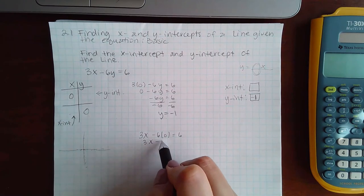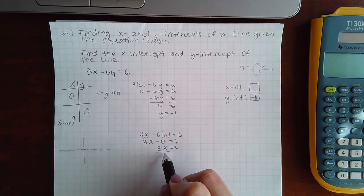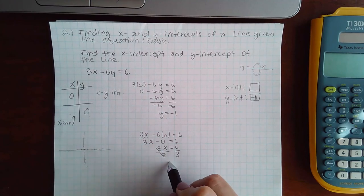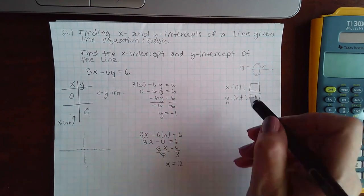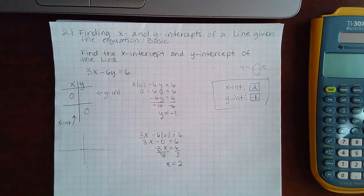So I get 3x minus zero equals 6, or just 3x equals 6. Divide both sides by 3 and we get x equals 2. And that is the x-intercept. And now we have found our answers.